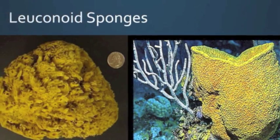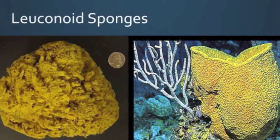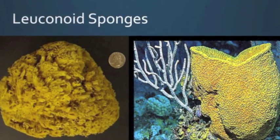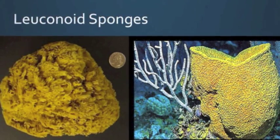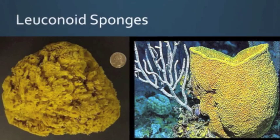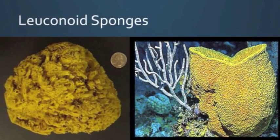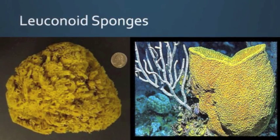Leuconoid sponges represent the highest level of complexity in sponges. They have lost radial symmetry and are very irregular in shape, and may attain large sizes. These are the biggest sponges.